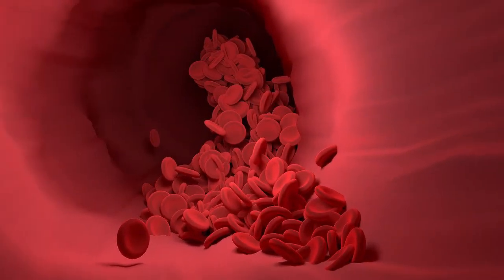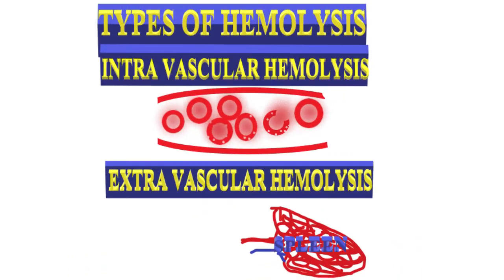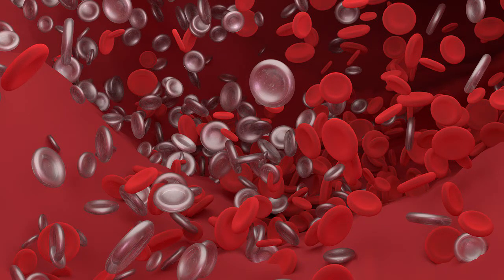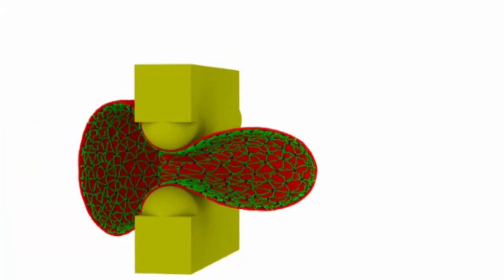According to the hemolysis where it occurs, it can be classified into intravascular hemolysis or extravascular hemolysis. Intravascular hemolysis is the destruction of RBCs in circulation with the release of cell contents into plasma, where direct membrane degradation causes the RBC hemolysis.